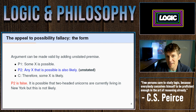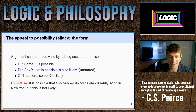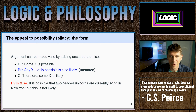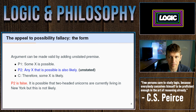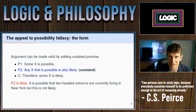One thing to note is that you could actually make the argument valid. What you would need to do is add the following unstated premise. Someone asserts X is possible, but what they would also need to assert is that any X that is possible is also likely, or also the case. This is usually unstated, but you'd need to be committed to it to draw the conclusion that X is likely. The second premise is false — it's possible there are two-headed unicorns in New York City, but it's certainly not actual and definitely not likely.